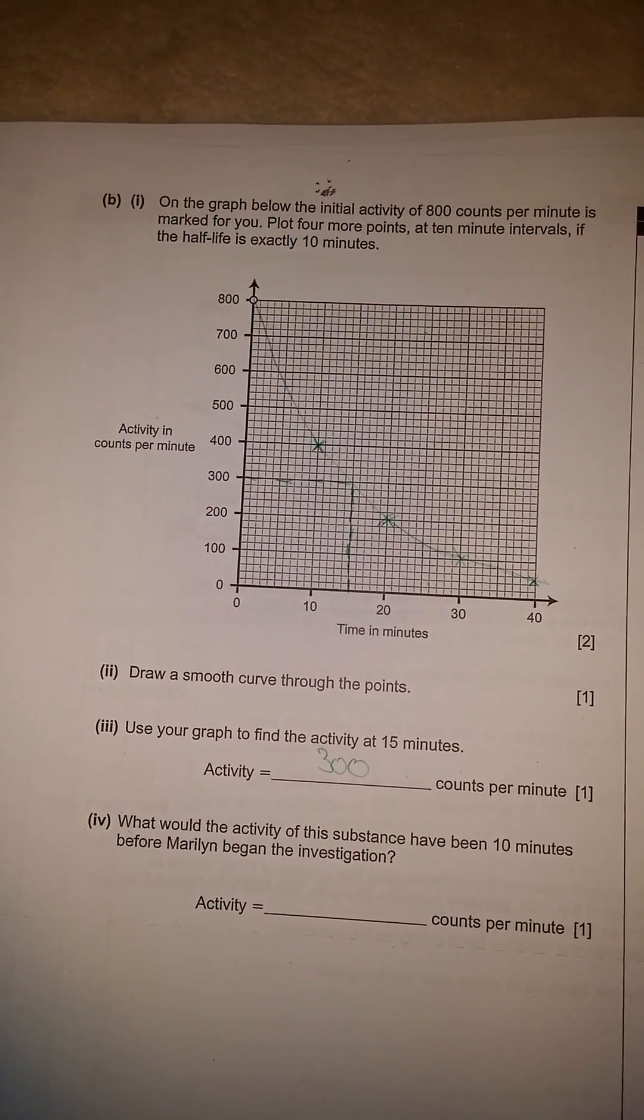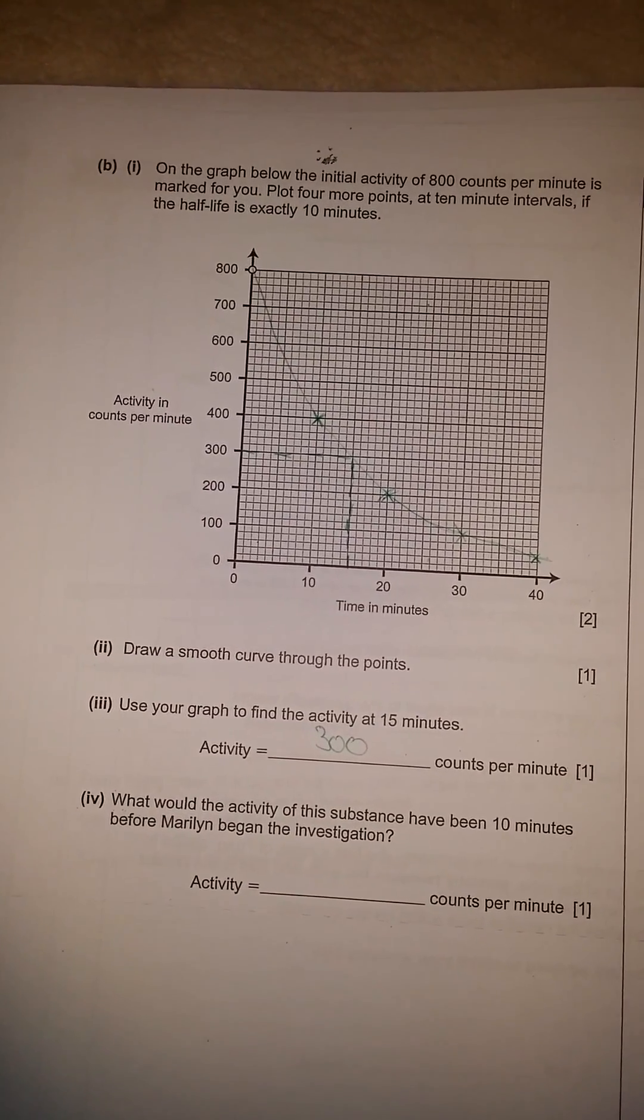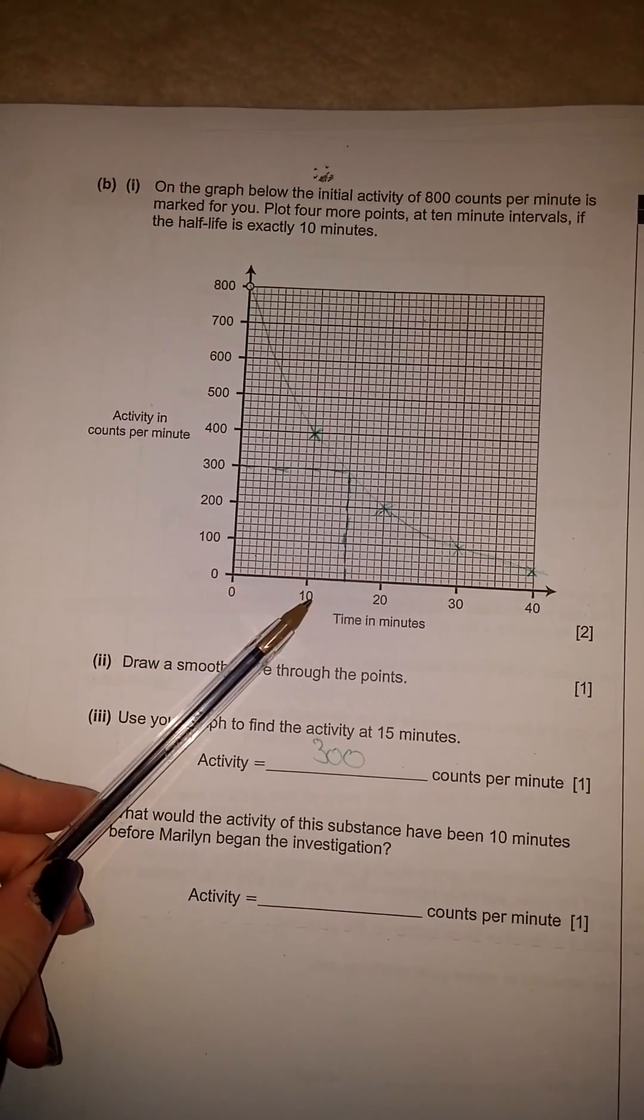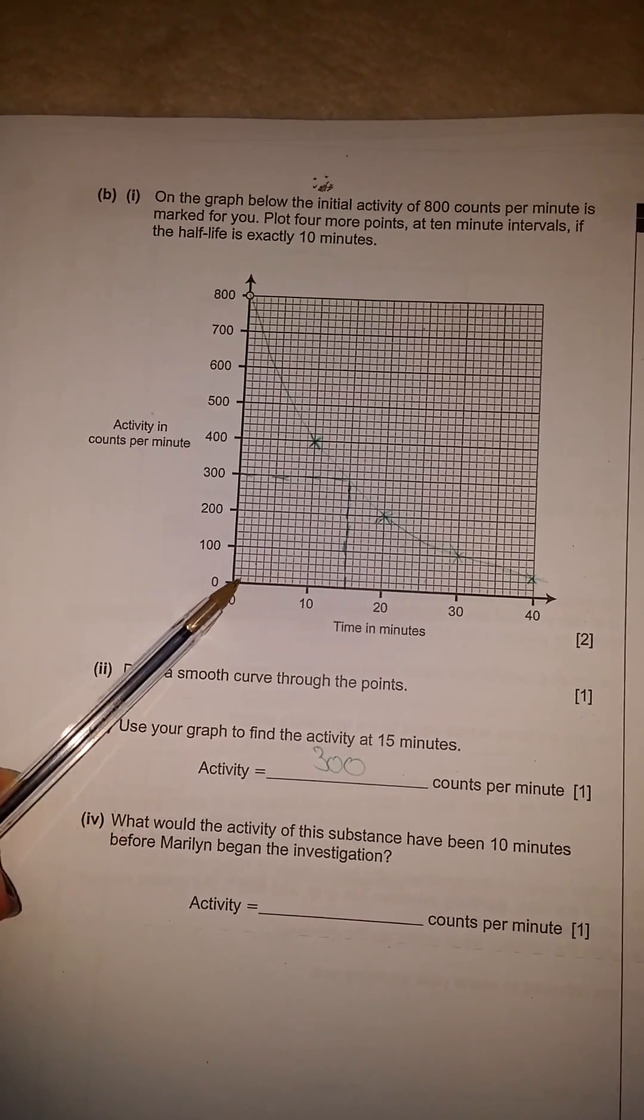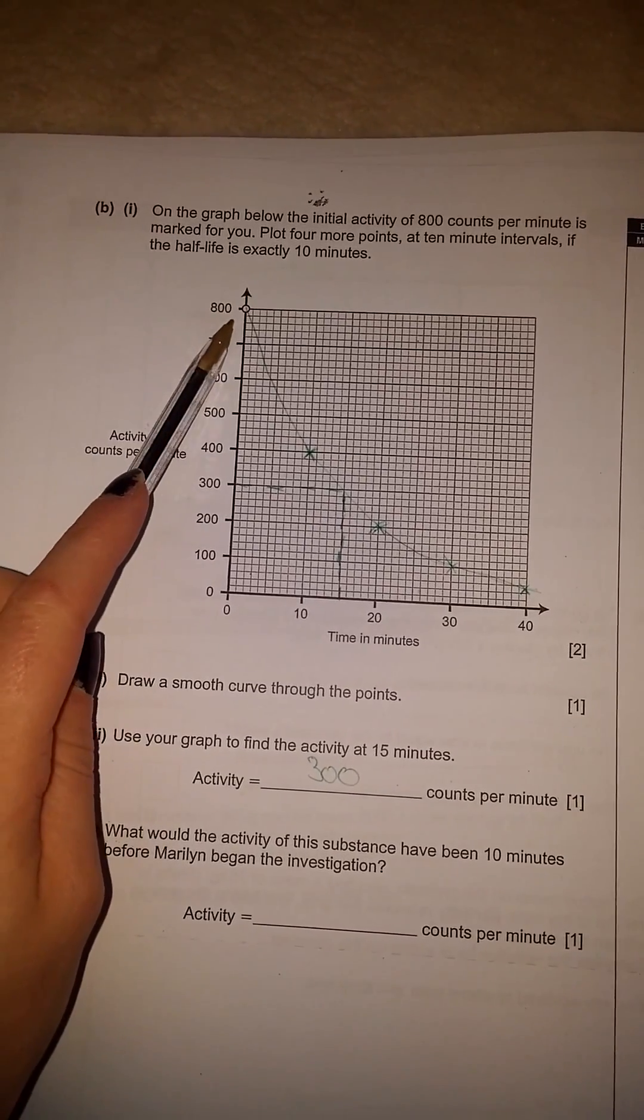What would the activity be if the substance had been 10 minutes before she started the investigation? So if you know that after 10 minutes, it divides by half, 10 minutes before she brought it in, it must have been double this amount then.